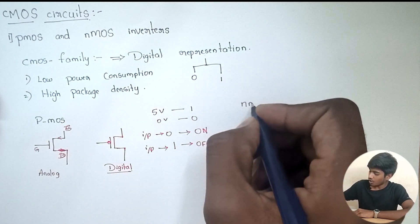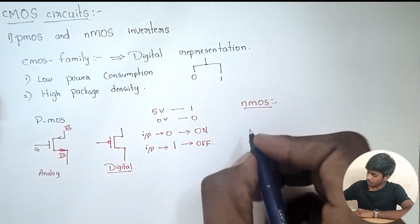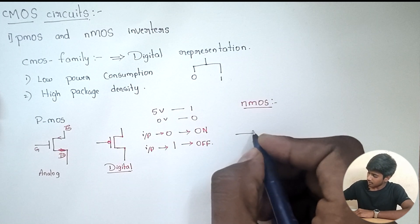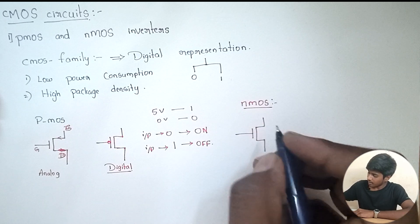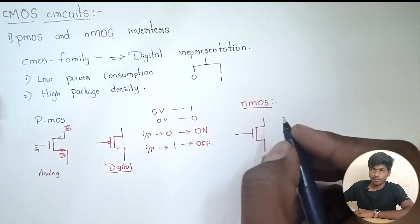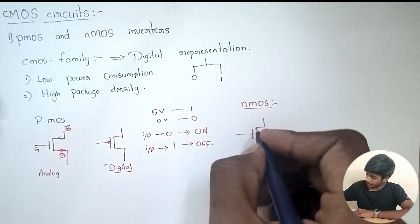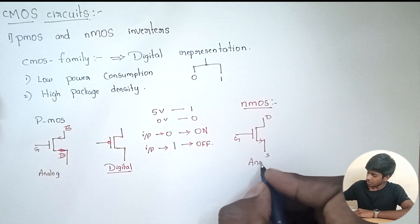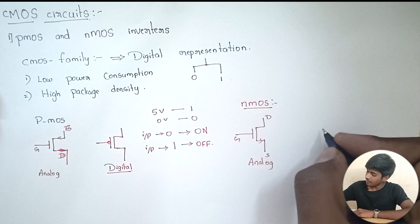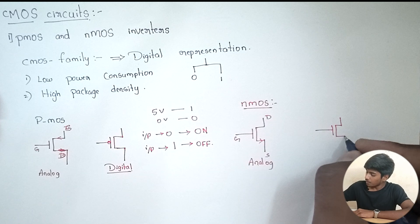The next one is NMOS. We represent NMOS similar to PMOS, but the drain and source terminals vary in the analog representation. In the digital representation, the bubble is removed. The terminals are drain, source, and gate. This is the analog representation of NMOS. In the digital representation of PMOS, one bubble was used to represent it; here in NMOS, the bubble is removed.